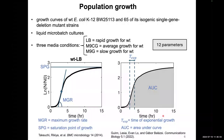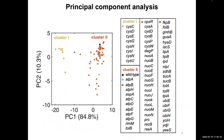The first thing we did was look at correlations between these parameters, and we found high correlations among many of them. By performing principal component analysis, we found that more than 95% of the entire data could be explained using only two parameters. Here you can see all 65 mutants projected onto the first two principal components.